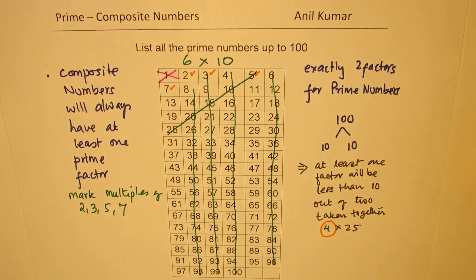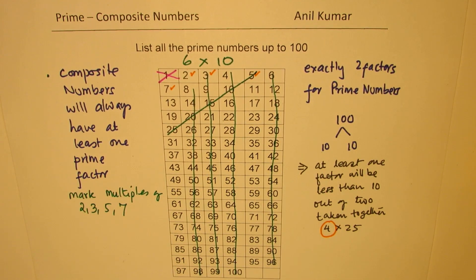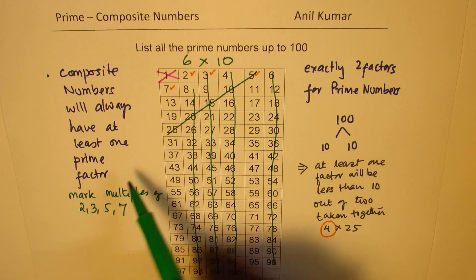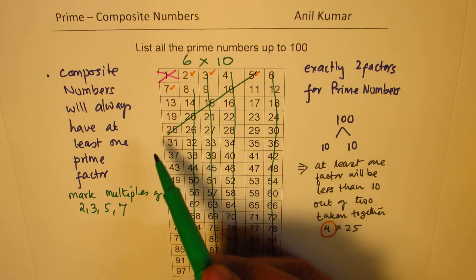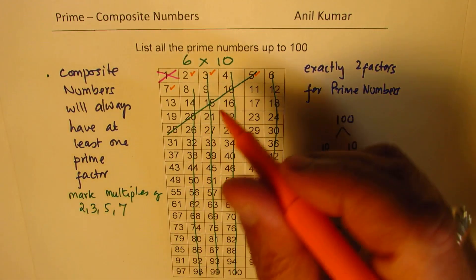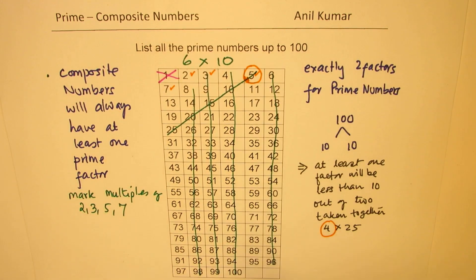So we get 5, 10, 15, 20, 25. Cross them out. These are the multiples. So they are composite numbers. Well, I should not have crossed 5. 5 is actually my prime number. The other multiples, right?